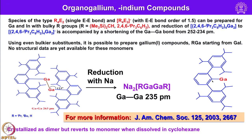Using sufficiently bulky groups, one can make an alkyl gallium with alkyl-to-gallium ratio 1:1. This undergoes dimerization, and treatment with sodium undergoes reduction to form a gallium–gallium double-bonded compound where the Ga–Ga distance is 235 pm, an indication of multiple bond character. For more information one can refer to the paper published in JACS in 2003.